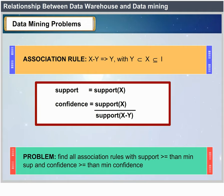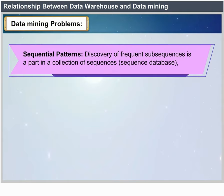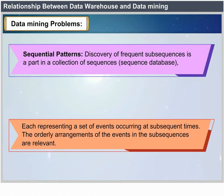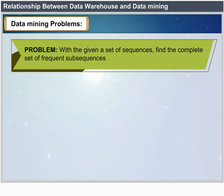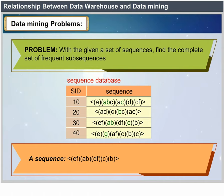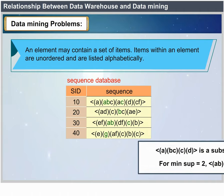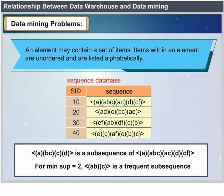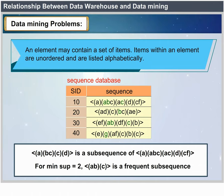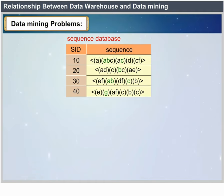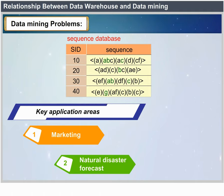Sequential patterns: Discovery of frequent subsequences in a collection of sequences. A sequence database contains sequences representing sets of events occurring at subsequent times; the ordering of events is relevant. Problem: given a set of sequences, find the complete set of frequent subsequences. For example, the sequence A B C D is a subsequence of A B C A C D C F. For min_support = some threshold, A B C is a frequent subsequence. Applications include marketing, natural disaster forecasting, analysis of web log data and DNA analysis.